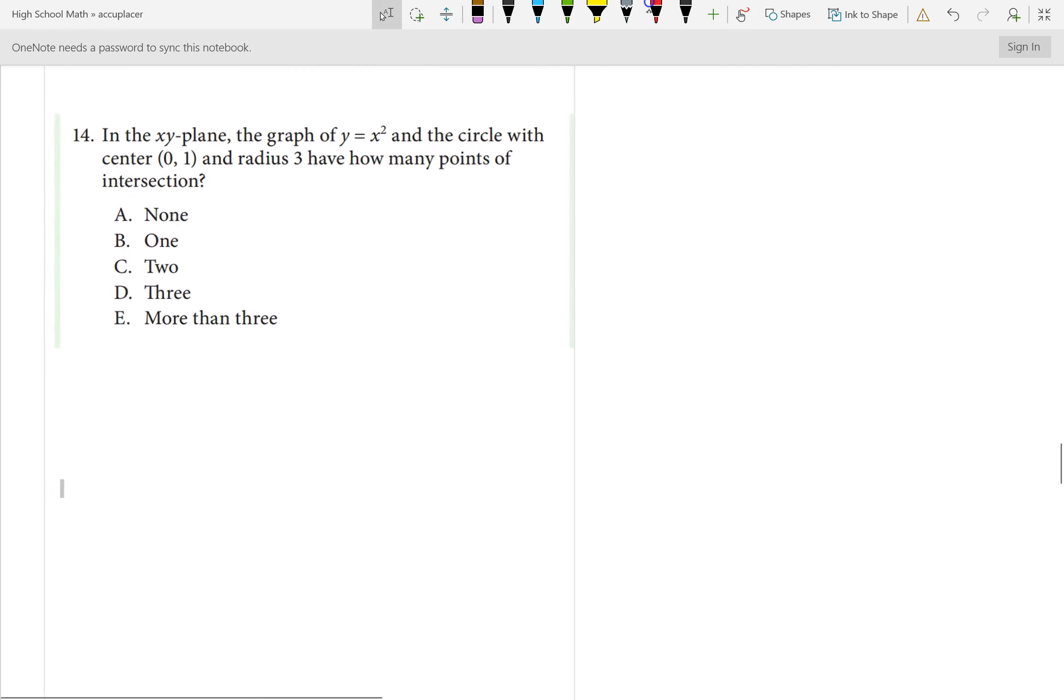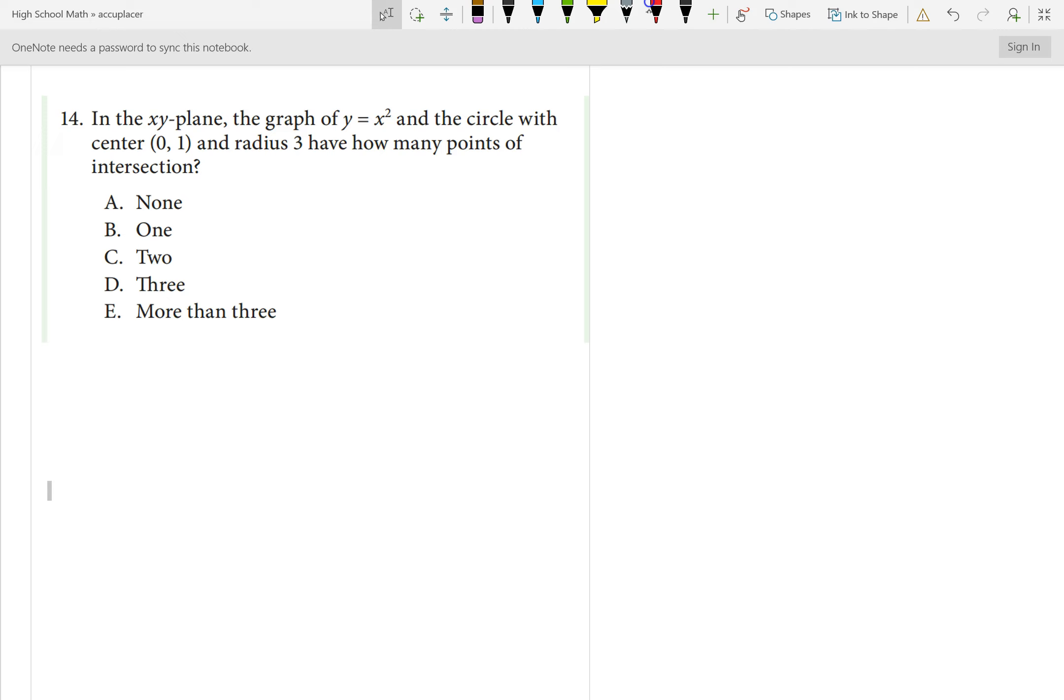Problem 14. In the xy plane, the graph of y equals x squared and the circle with center 0, 1 and radius 3 have how many points of intersection? Let's see if we can maybe look at this. We want a circle at center 0, 1. So, here is 0, 1. And we want a radius of 3. So, out 1, 2, 3. This would be one point, up 1, 2, 3. That would be another one. And I need to draw a circle. There's my circle of radius 3.